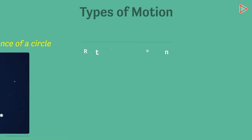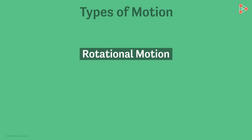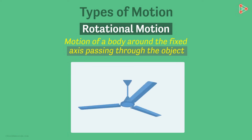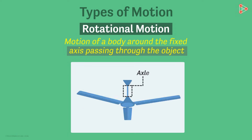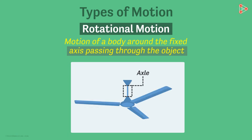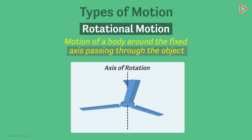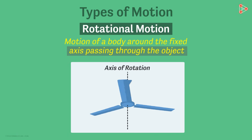The third type of motion is rotational motion. It is the motion of a body around a fixed axis which is passing through the object — this is important, the axis has to pass through the object. An example of rotational motion is a ceiling fan rotating along its axle. If you draw a hypothetical line called the axis of rotation, it passes through the fan.